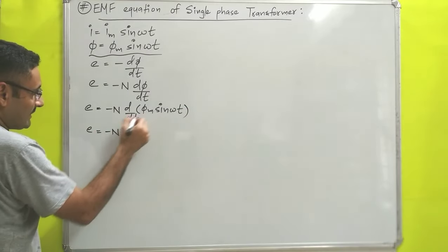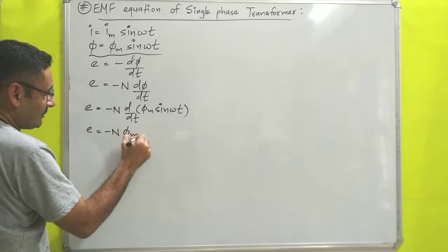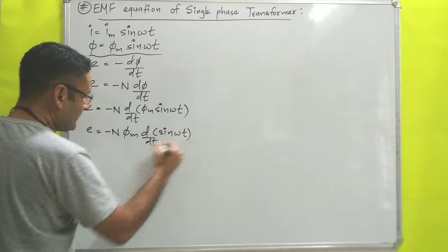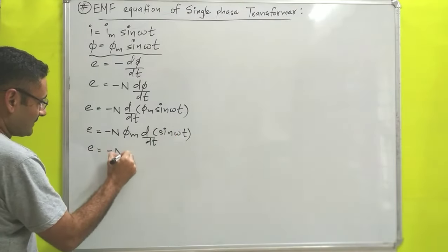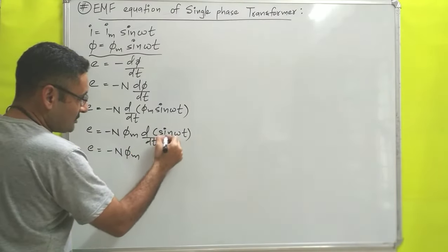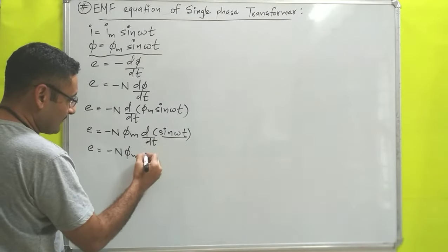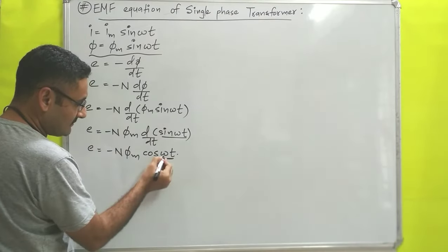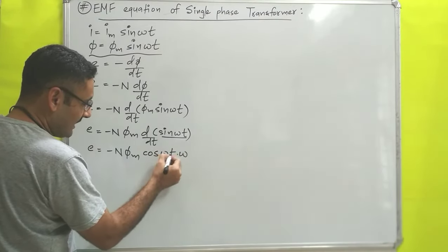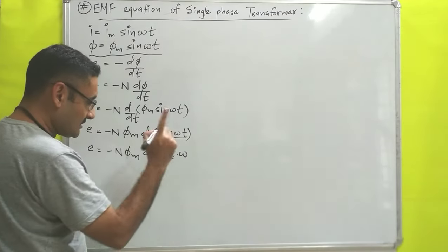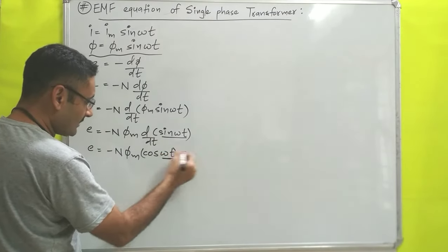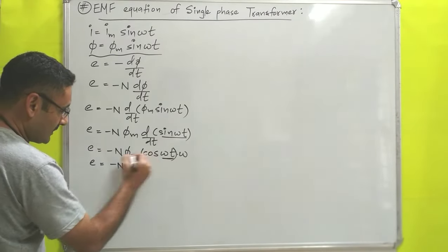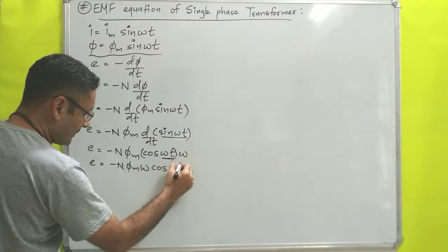So E = -N φm d/dt of sin(ωt), where φm is the maximum flux and is constant. The differentiation of sin(ωt) with respect to t is cos(ωt) multiplied by ω, since ω is constant and the differentiation of t is 1. Therefore E = -N φm ω cos(ωt).